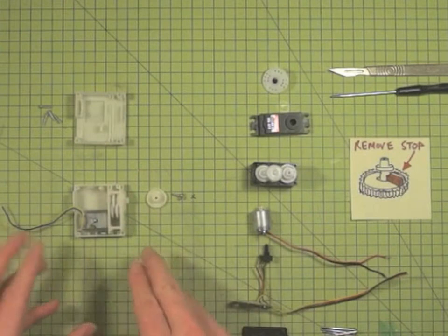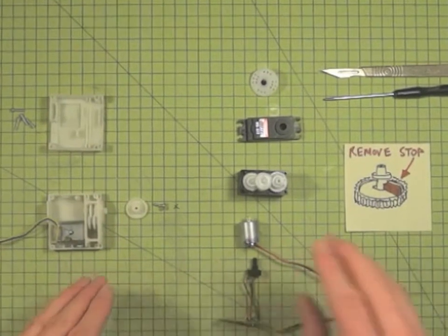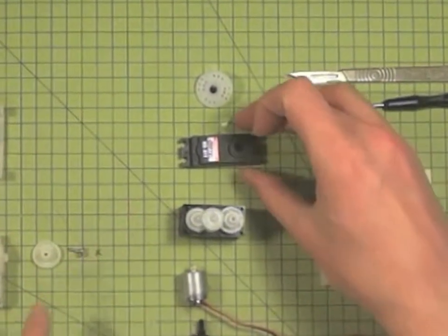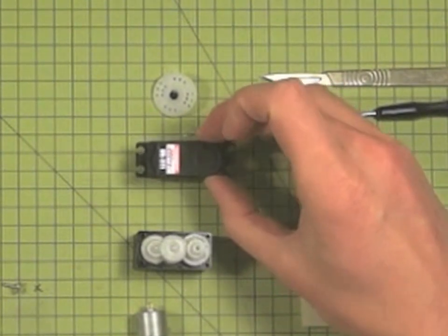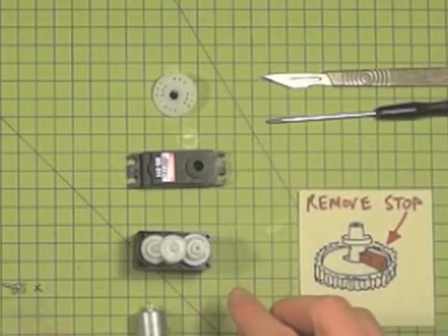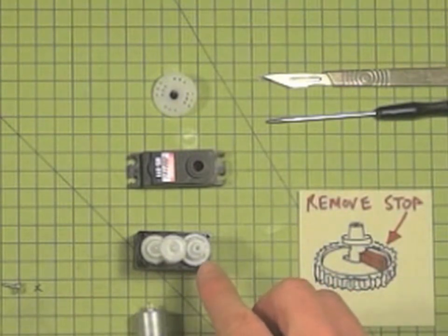So take it apart, they do usually come apart quite simply. If we look at this for example, a high-tech HS311 servo, you'll find that this gear here will come out.